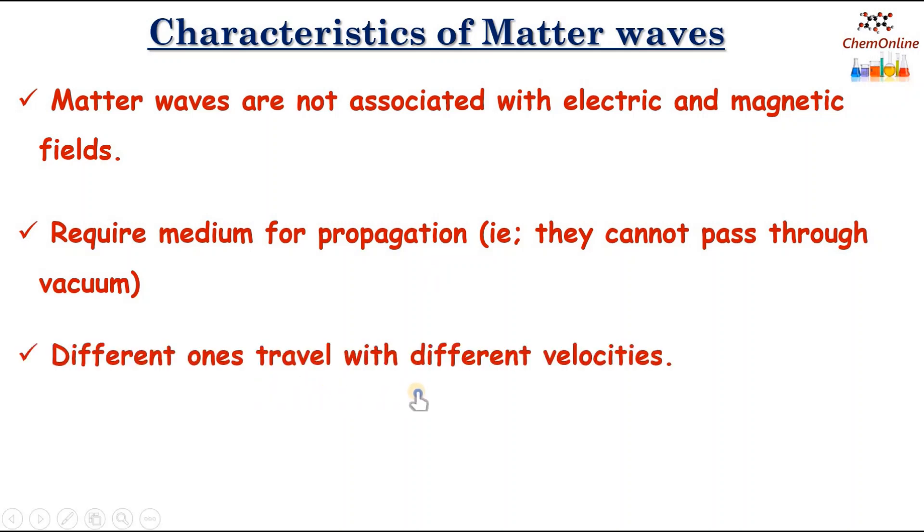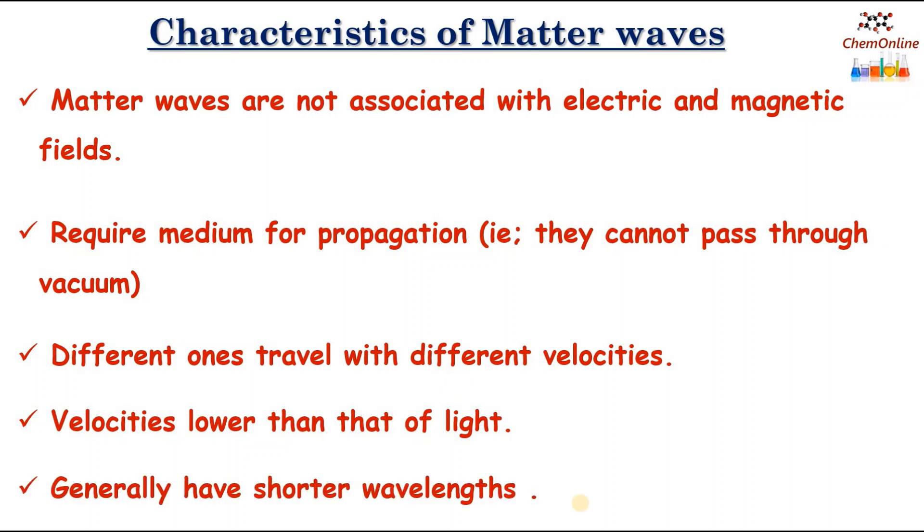Different matter waves travel with different velocities. At the same time, all kinds of electromagnetic waves travel with the same velocity, that is, the velocity of light. Matter waves have velocities lower than that of light. Matter waves also have shorter wavelengths when compared to the wavelength of the electromagnetic radiations, given by the de Broglie relation lambda equals h by mv.